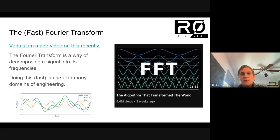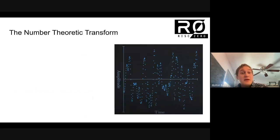And so what we'll learn today is more about the specific version of the Fourier transform that is used in RISC-0, and that is the number theoretic transform.